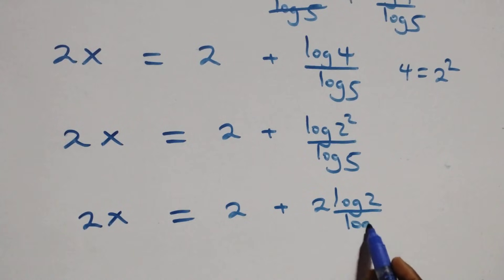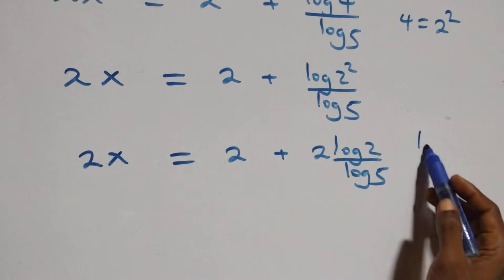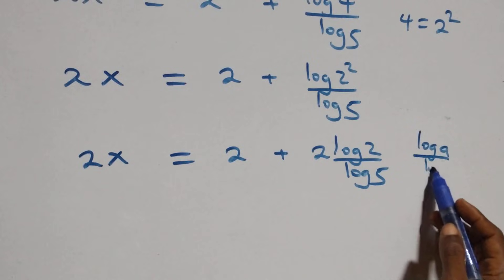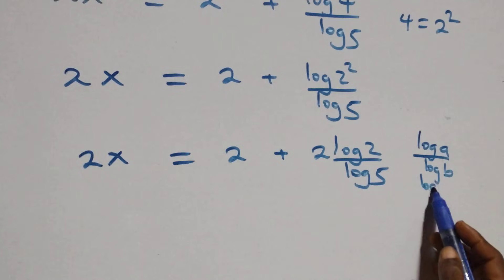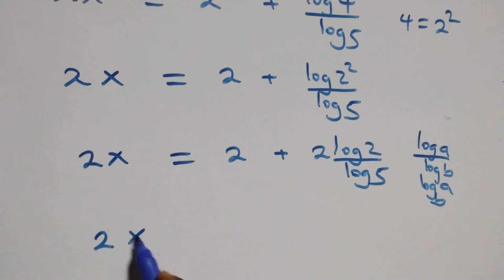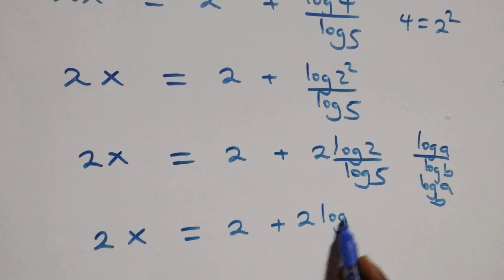Then we apply the power rule of logarithms: the 2 comes down, giving 2x equals to 2 plus 2 times log 2 over log 5. Then we apply the change of base formula: log a over log b is the same thing as log a to base b. So 2x equals to 2 plus 2 times log 2 base 5.